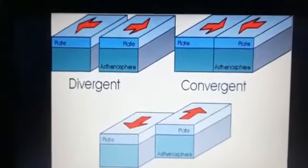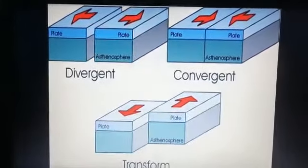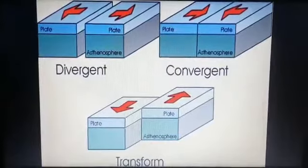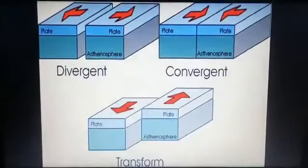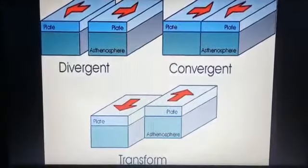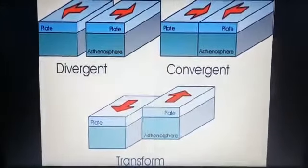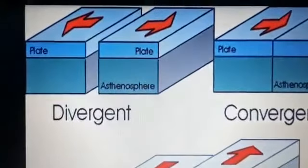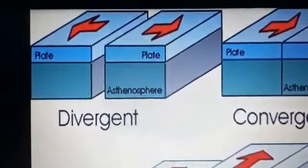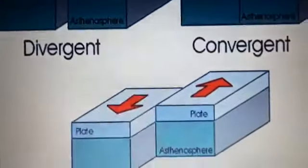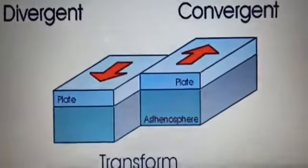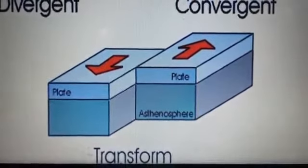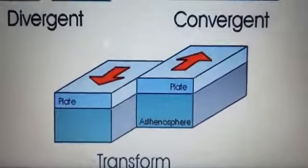Convergent boundaries are formed when plates come towards each other. Divergent boundaries are formed when plates move away from each other. Transform boundaries are formed when plates move horizontally past each other.